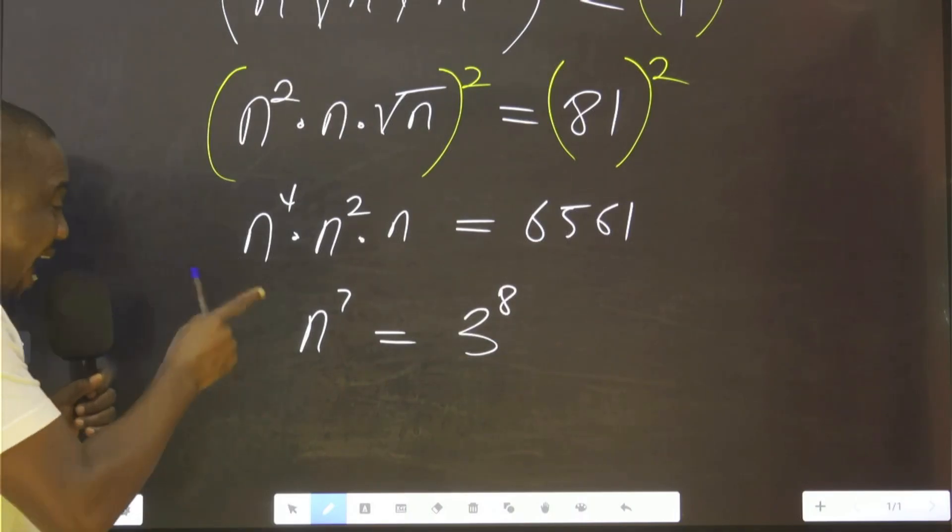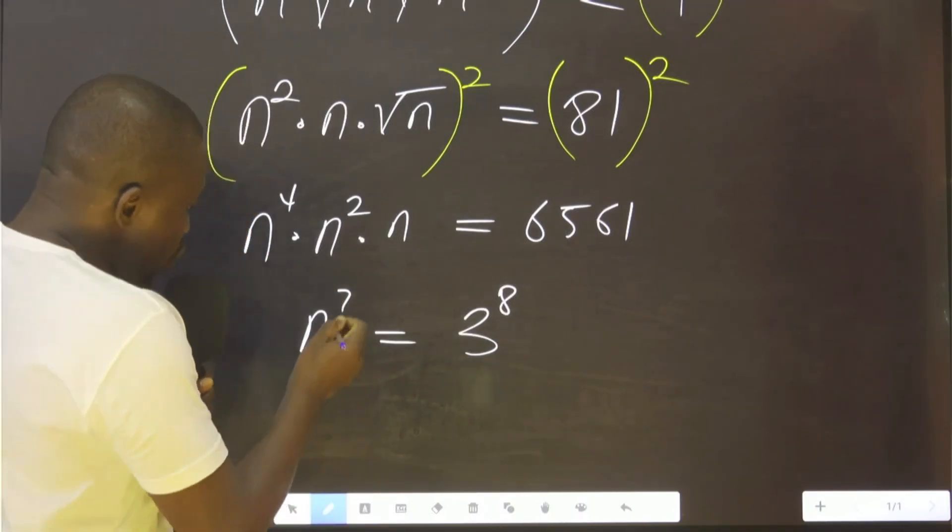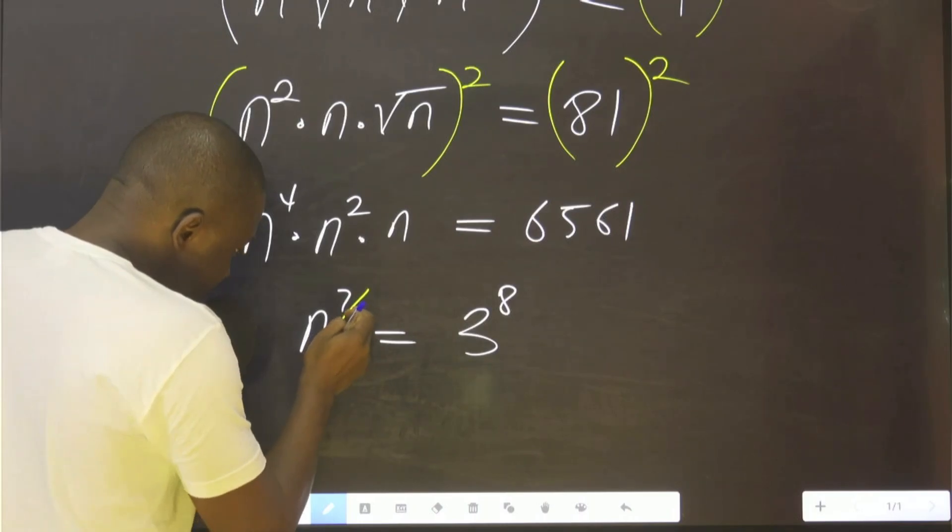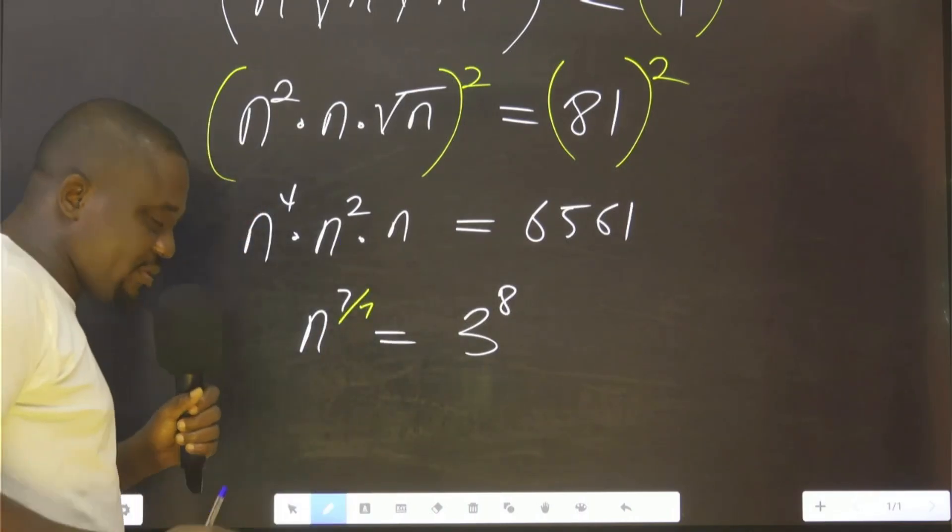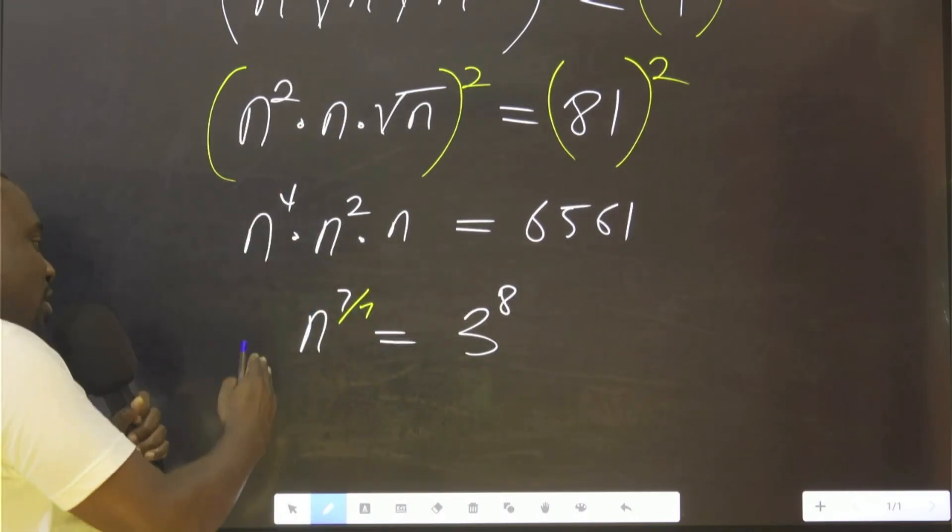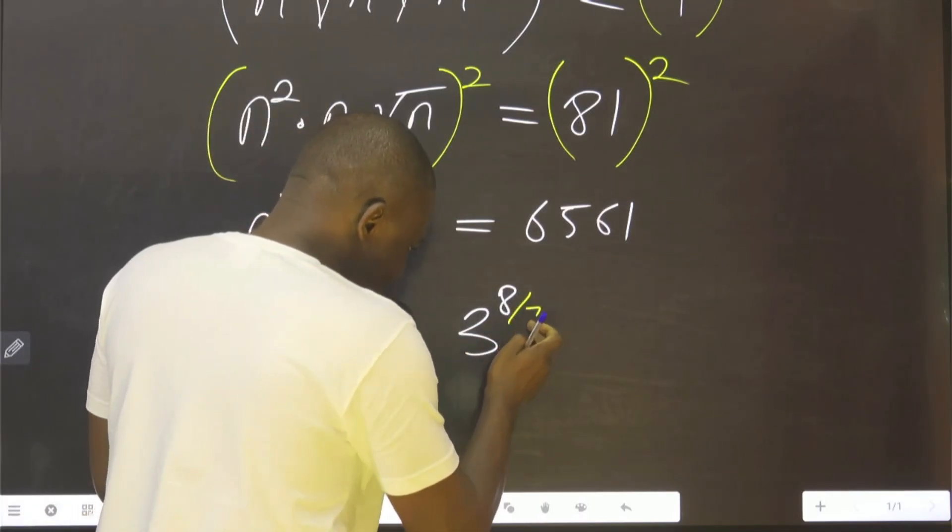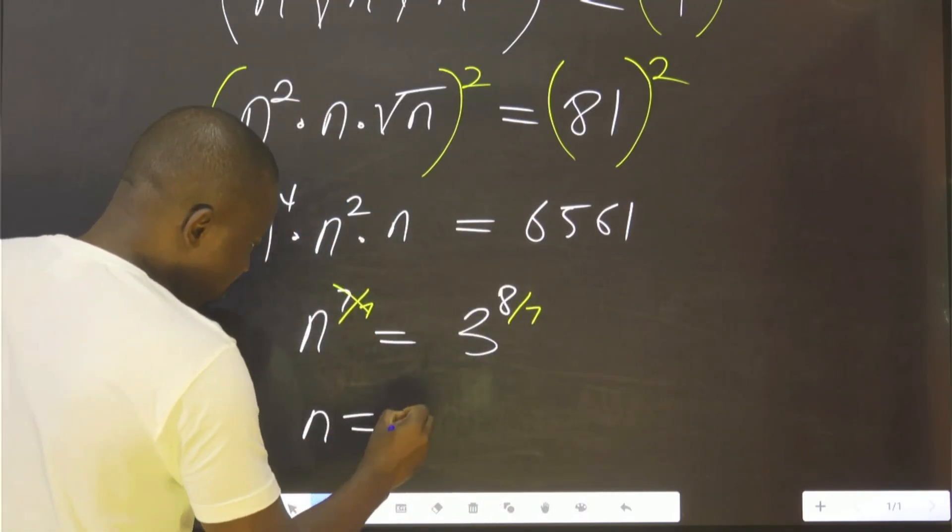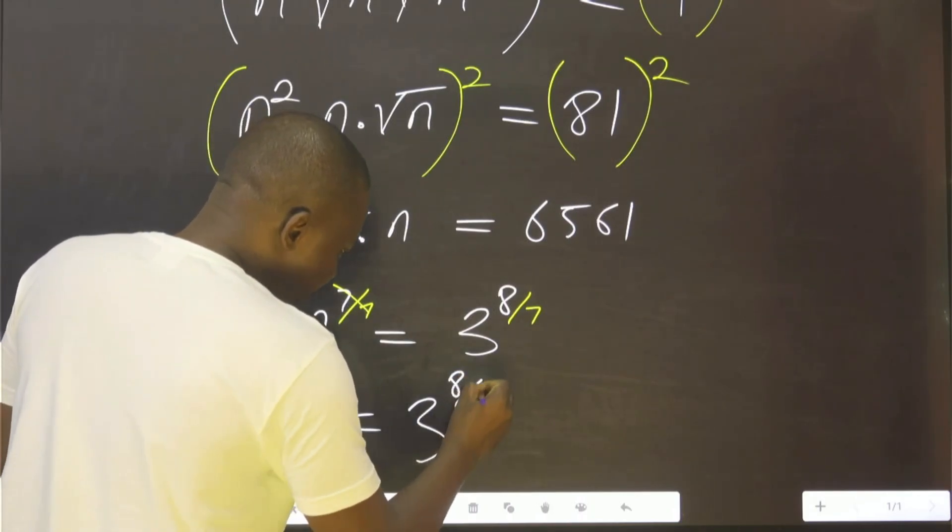Now we are looking for n. For n to be alone, we remove this by dividing by 7. Because we did this to this side, we must also do it to the other side. So this and this will go, n becomes equal to 3 raised to the power 8 over 7.